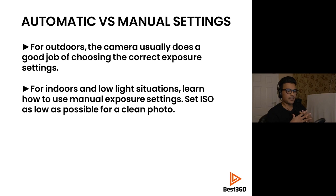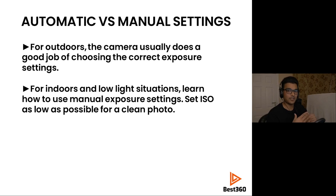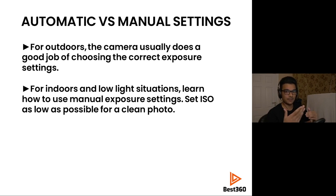Regarding automatic vs. manual exposure settings: for outdoors, the camera usually does a good job choosing correct auto exposure settings — it will choose the lowest ISO for the cleanest photo and pick the right shutter speed. For indoors and low light situations, I highly recommend learning manual exposure settings. Set your ISO as low as possible for a cleaner photo. The rule of thumb: keep your ISO on 100 and you'll get the cleanest photo possible.